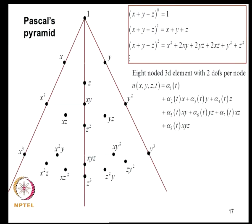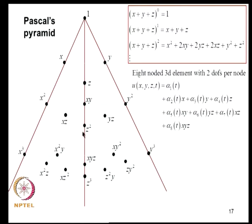In 3 dimensions, we use a Pascal pyramid. (X + Y + Z)^0 = 1; to the first power: X, Y, Z; squared: X², Y², Z², 2XY, 2YZ, 2XZ; cubic terms follow similarly. The same principle of maintaining symmetry about the central axis applies when selecting polynomial terms for 3D interpolation.